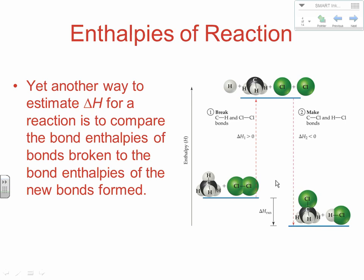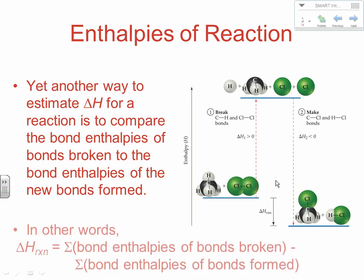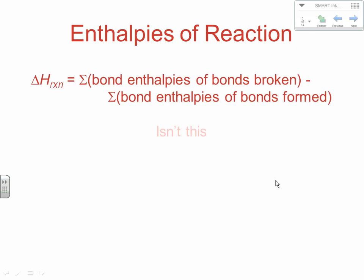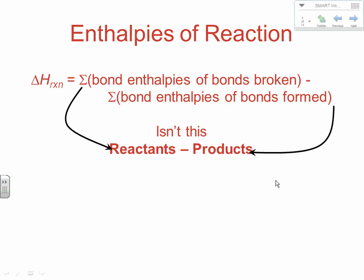If you look at a typical reaction, we're going to look at the bond enthalpies before and after the reaction to determine the total amount of energy. We start by breaking some bonds from the reactants, and then we end by making some new bonds on the product side. The equation is: the sum of the bond enthalpies that are broken minus the sum of the bond enthalpies that are formed. Bond enthalpies broken come from the reactant side; bond enthalpies formed come from the product side. So superficially, this looks like reactants minus products.